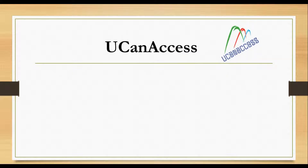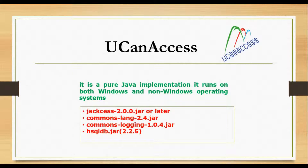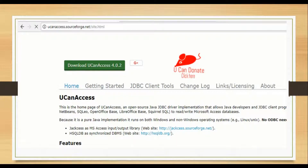Now you have to download the UCanAccess library from the internet. UCanAccess is a pure Java implementation — it runs on both Windows and non-Windows operating systems. UCanAccess comes with four other dependencies: jaccess, commons-lang, commons-logging, and hsqldb.jar, which already come in the lib folder of the UCanAccess library. Here is the link from where you can download the UCanAccess library.